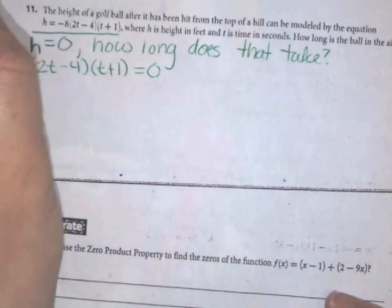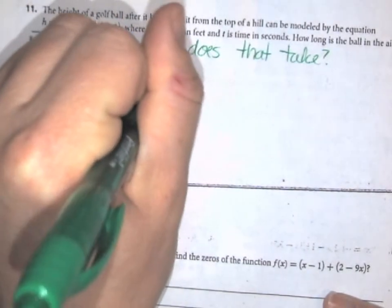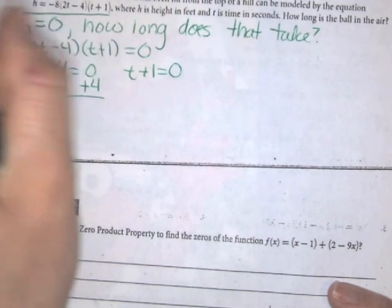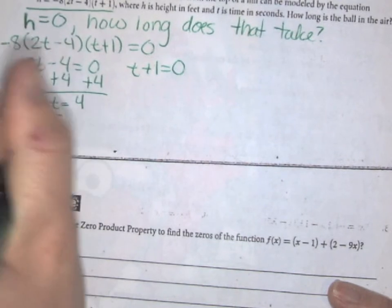Since -8 cannot be zero, we'll set our other factors equal to zero and solve. Now I divide.